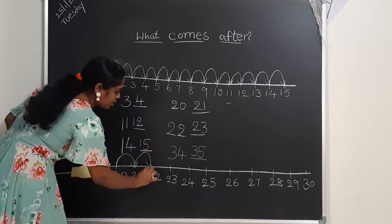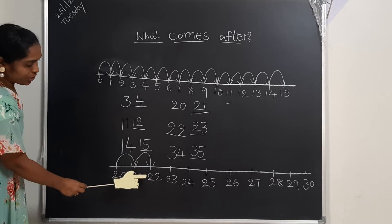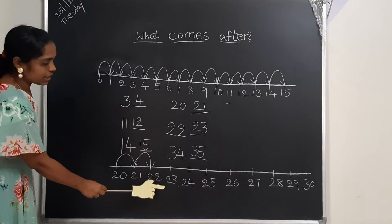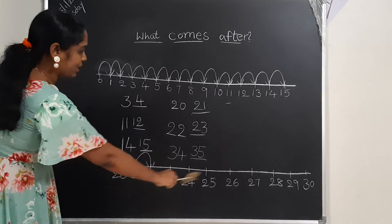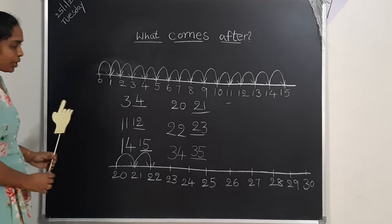20 after... 21, 21 after... 22. Like that. 22 after... 23. Start drawing like this. Then you have the complete idea about after numbers.